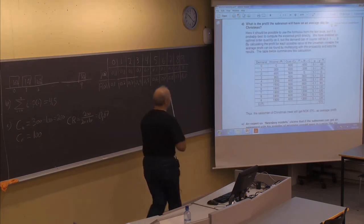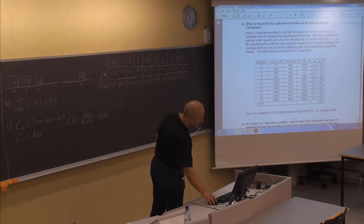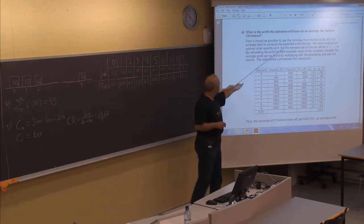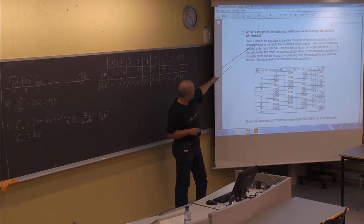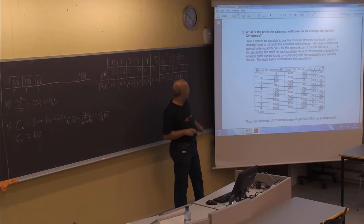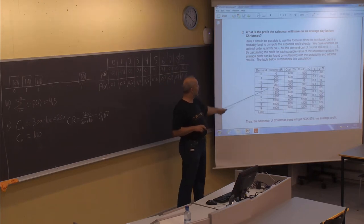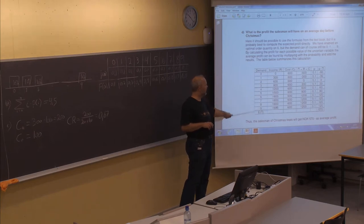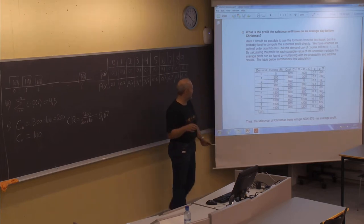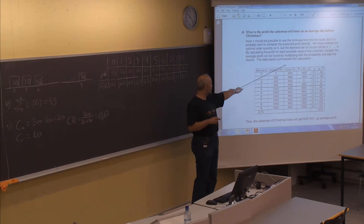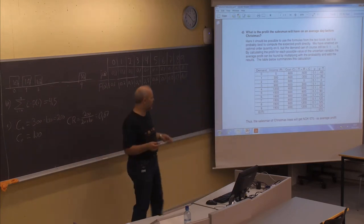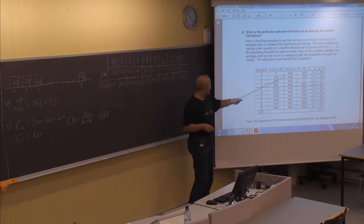This is the way to calculate the profit. We can use this formula, but it is best to compute the expected profit directly. We have the demand shown here, and we can see what the income will be in all these cases if you are buying six trees. The cost will be fixed because we have now decided to buy six trees at a cost of 600.